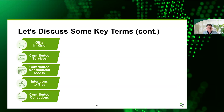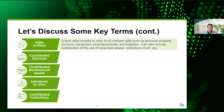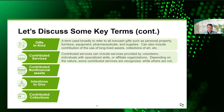Gifts in kind is a term we broadly use to refer to all non-cash gifts — could be personal property, furniture, equipment, pharmaceutical supplies, or even the use of long-lived assets. Those folks with $1 leases to use buildings — that's a gift in kind. Could include collections of art. There's also contributed services, which generally include services provided by volunteers, individuals with specified skills, or even affiliated organizations. Depending on the nature and who's providing the services, that will drive whether or not you recognize those.